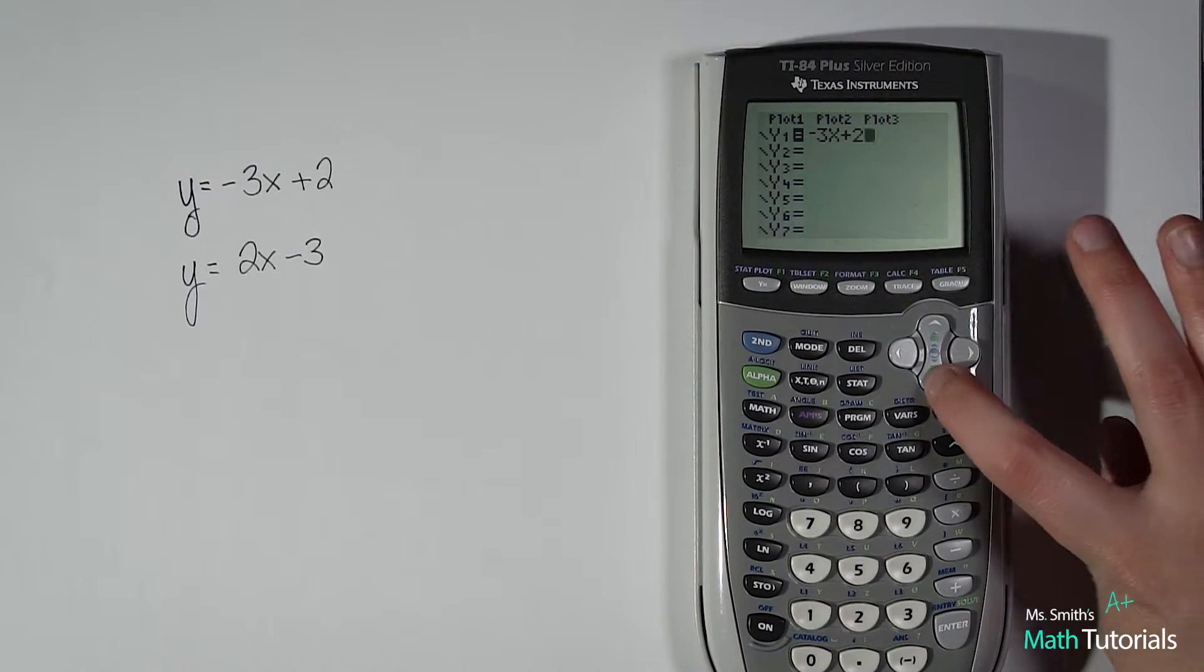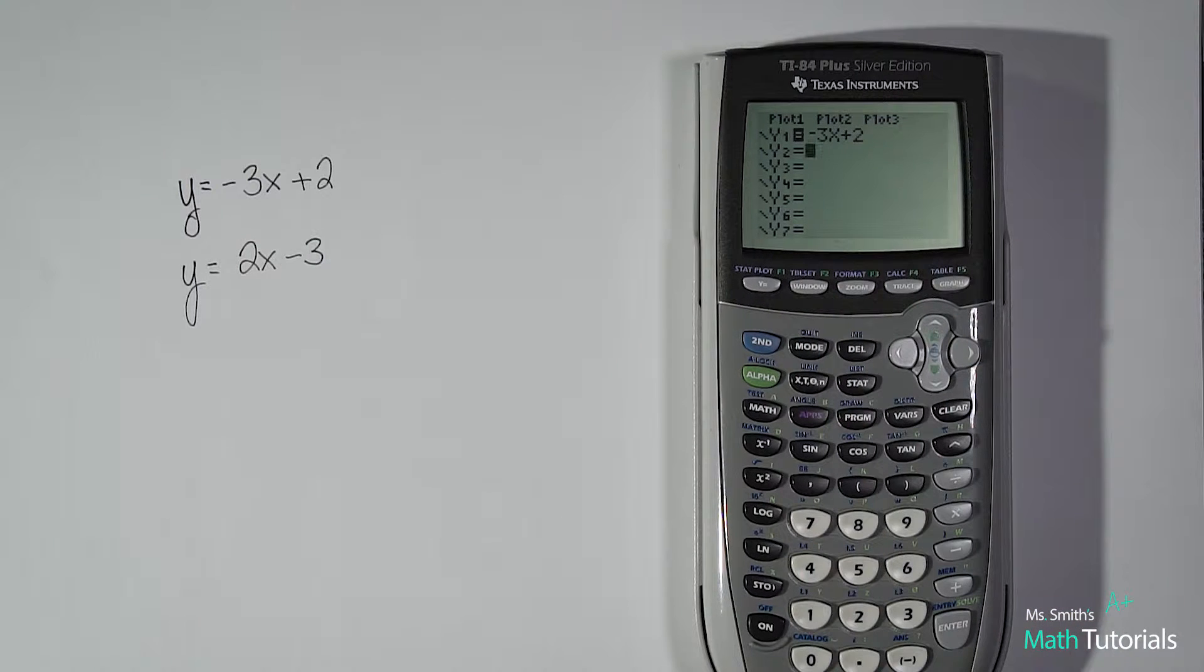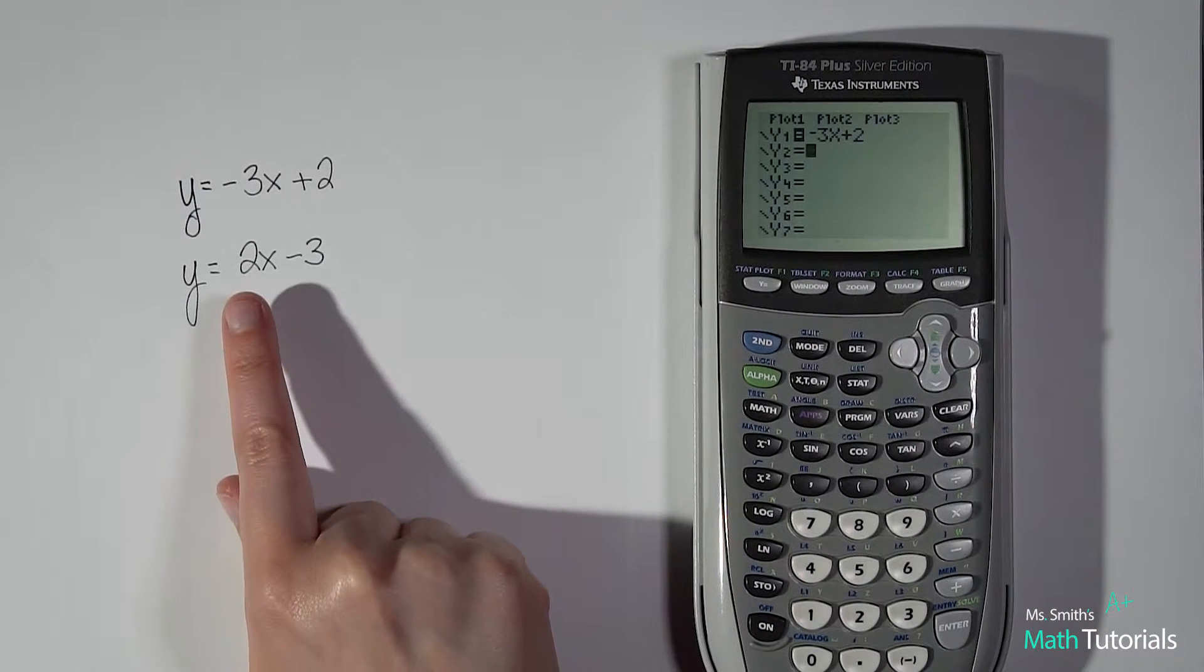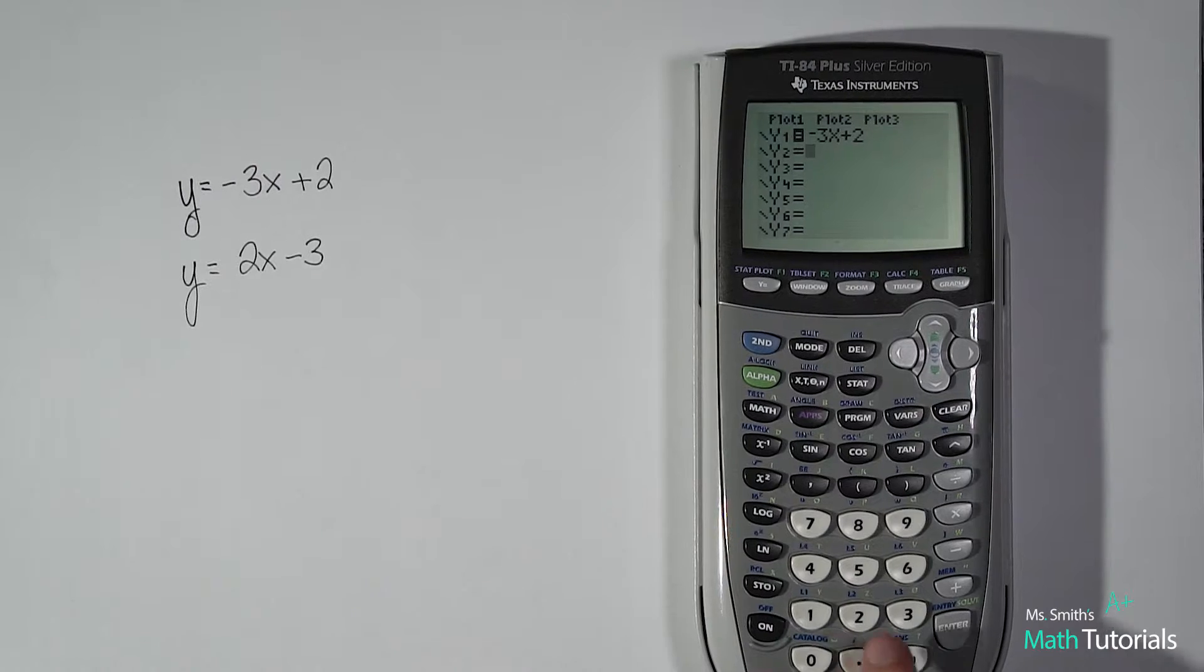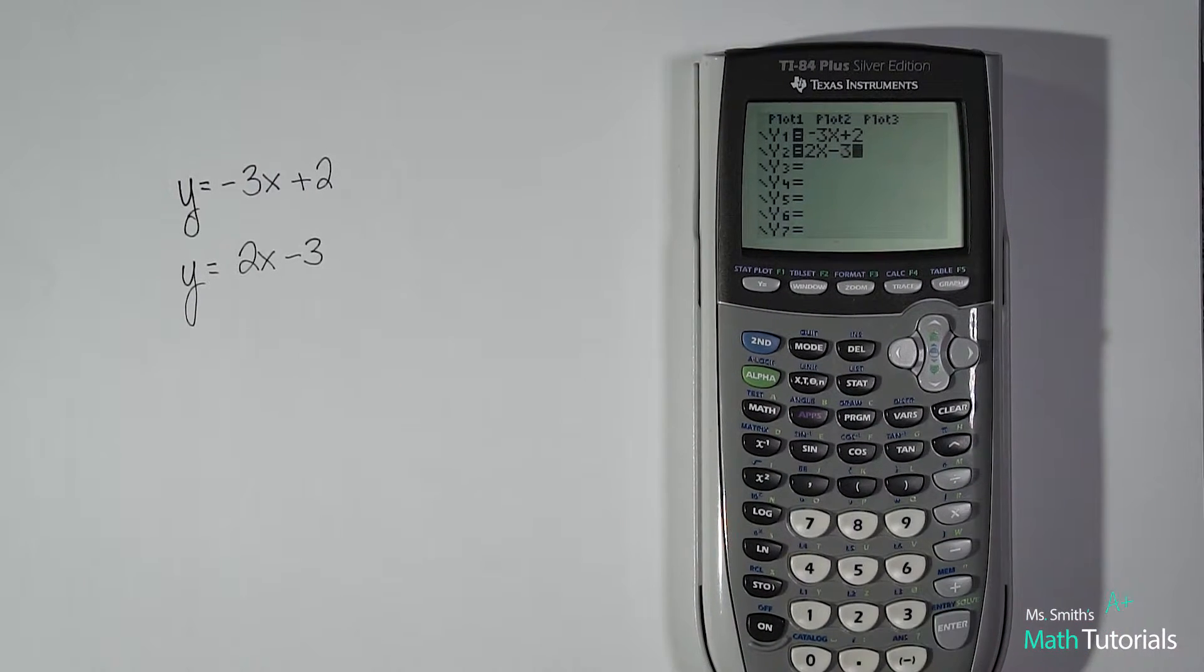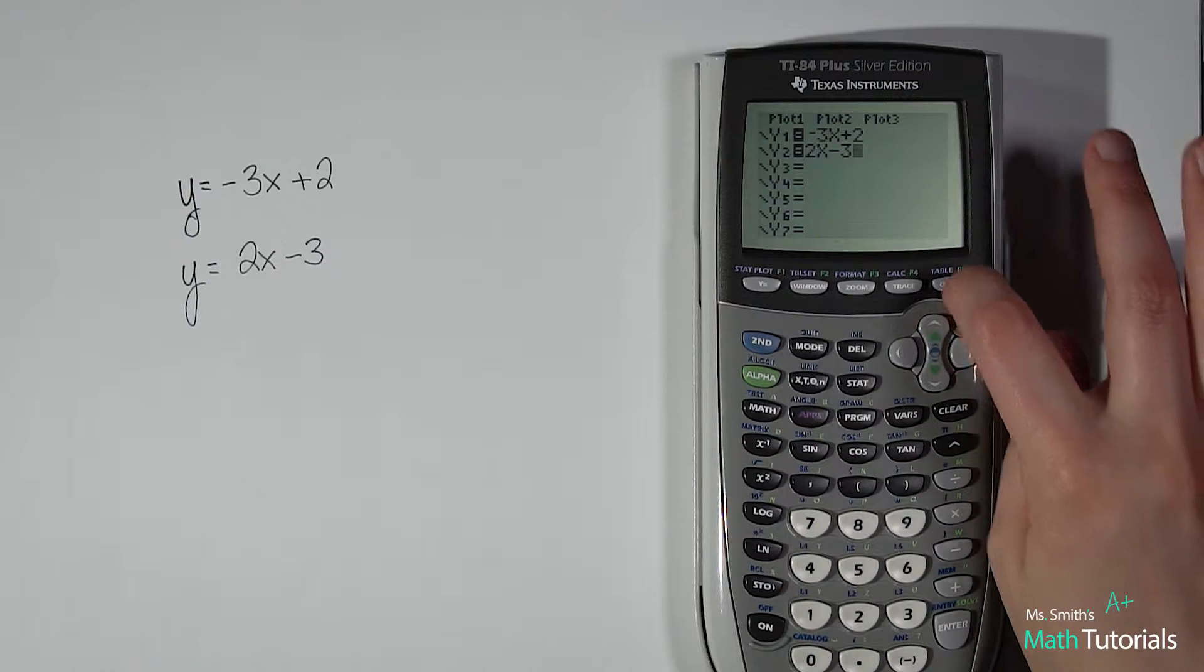And then I'm gonna use my down button to move to my second line and I'm gonna type in the second equation. So y equals 2x, 2x minus 3. So I've typed in both my equations and I'm gonna hit graph.